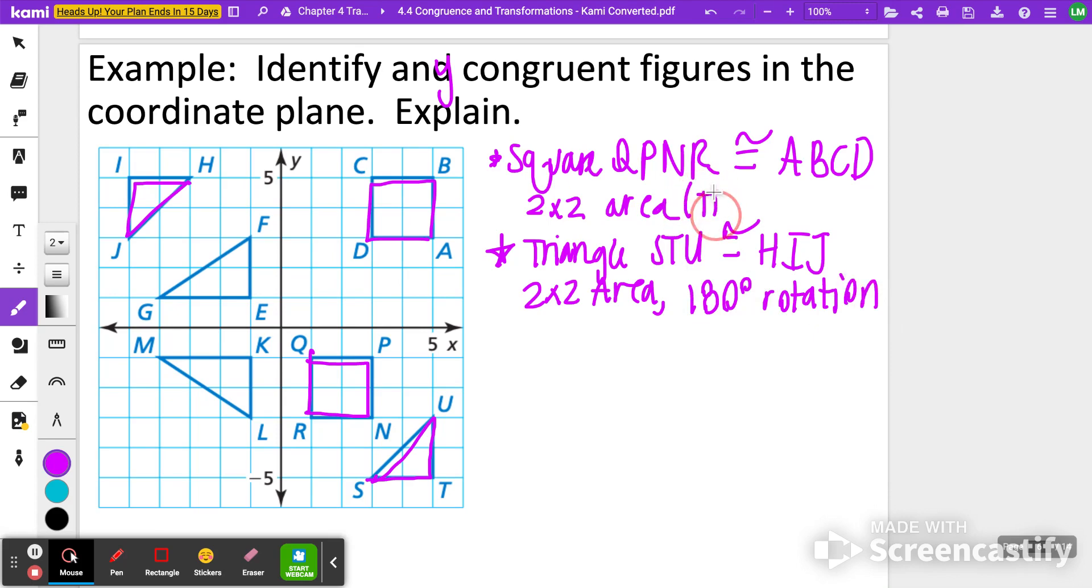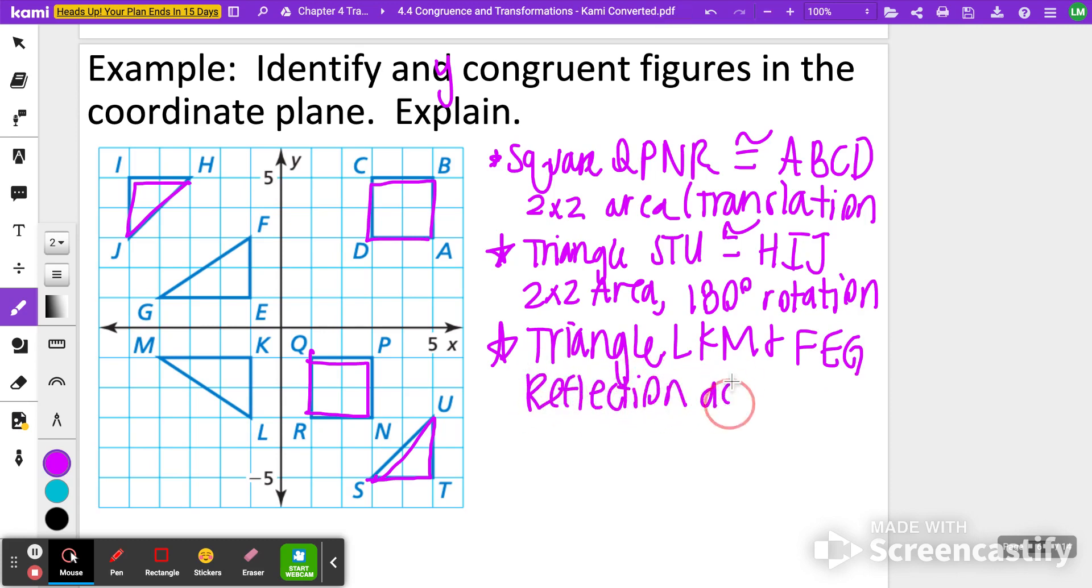The squares, that was a translation. And then the last two that are obviously congruent, triangle LKM and FEG. They are just a reflection across the x-axis. And they both have a 2x3 area. So those are just different ways that you can determine which ways they were shown through their congruency.